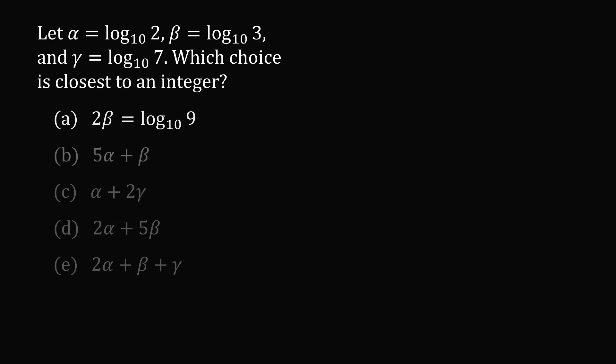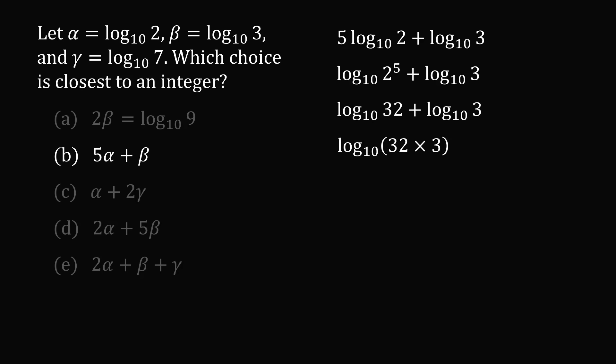Now let's consider answer choice B. We have 5 alpha plus beta. We just substitute in for alpha and beta. We can now use the rules of logarithms to simplify. So the first term is equal to log base 10 of 2 to the power of 5. 2 to the power of 5 is equal to 32. We are now summing two different logarithms with the same base of 10. So this will be equal to log base 10 of the product of 32 and 3. 32 times 3 is equal to 96.